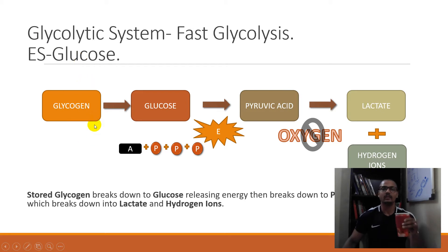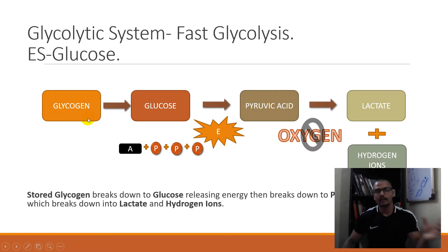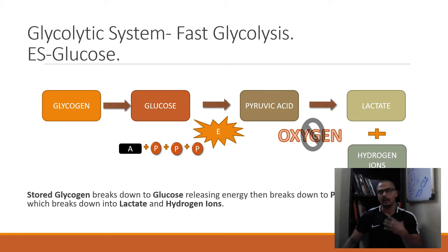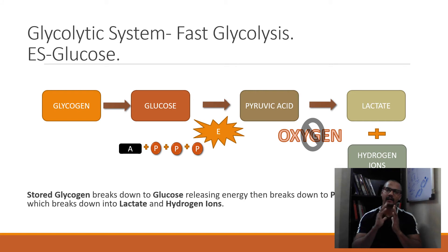The body can still maintain relatively higher intensities and use carbohydrates or the glycolytic system for fuel. The first part of the glycolytic system is what we call fast glycolysis. The energy substrates are glucose molecules.